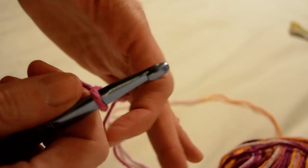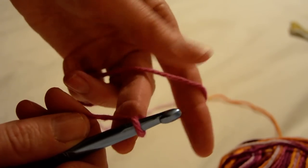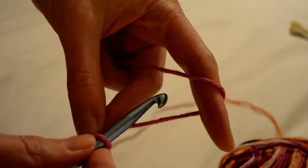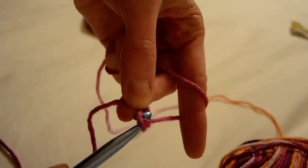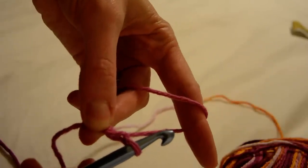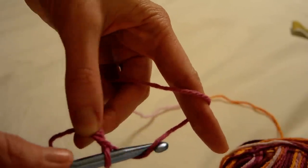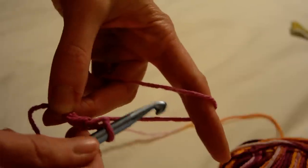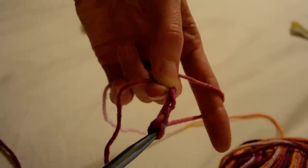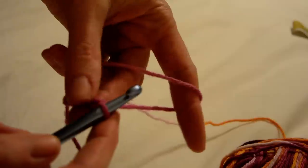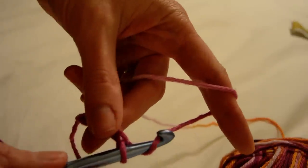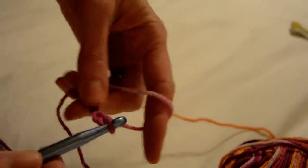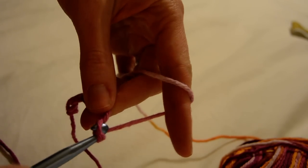The first thing we do is crochet a chain. All we do is take our yarn and pull through the loop. That's our first chain, second chain, third chain. We're going to chain 19 for this washcloth. Four, five, six...